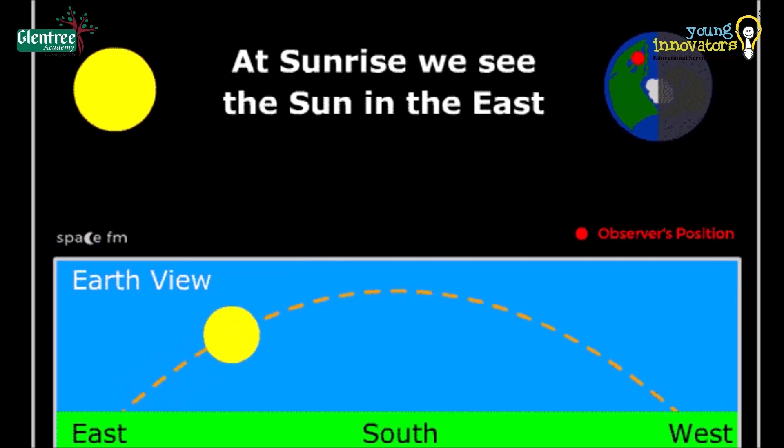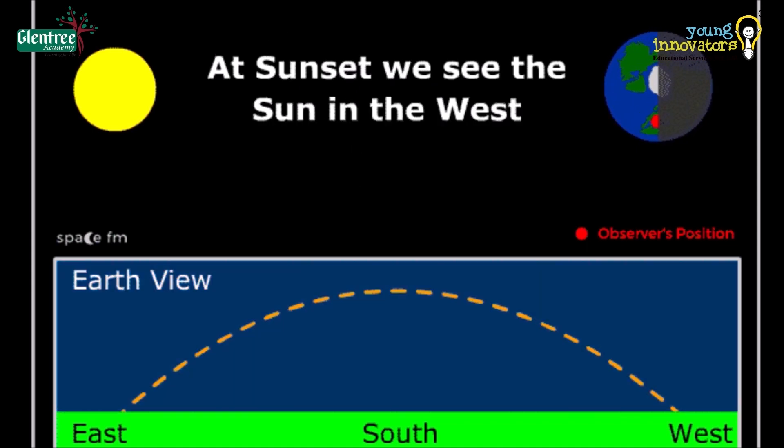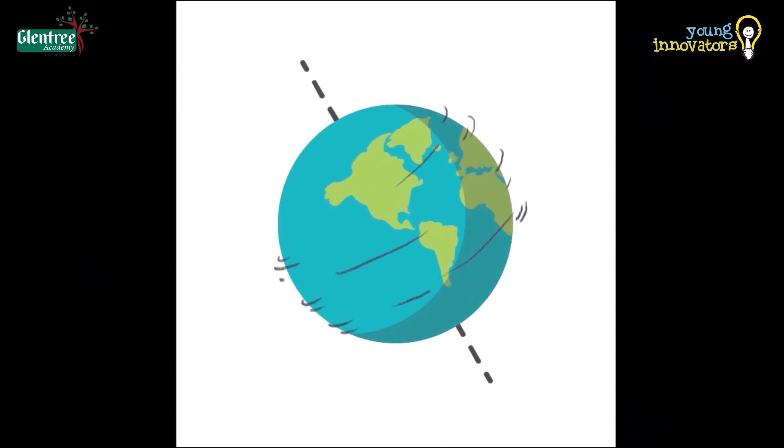Our day and night is about 12 hours each, which sums up to 24 hours. And that made us believe that objects are rotating, i.e. our earth is rotating, in which we are living.